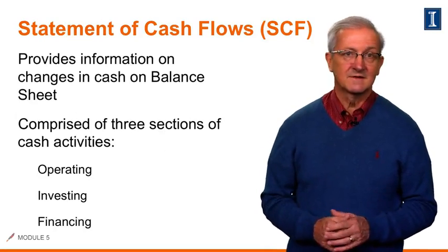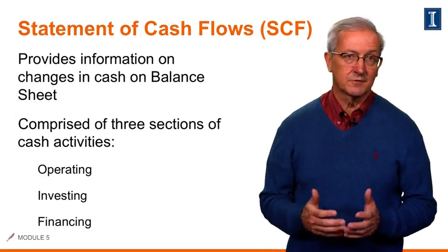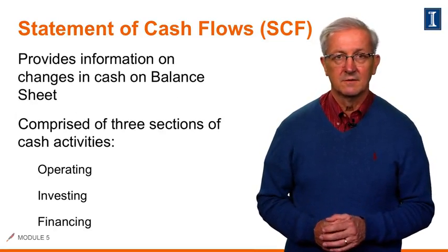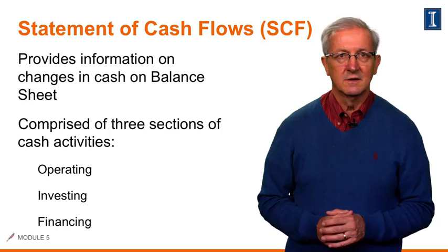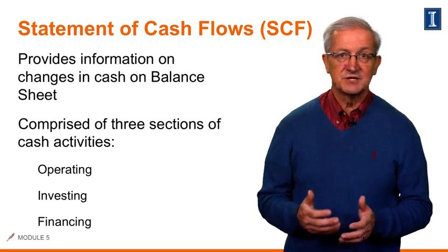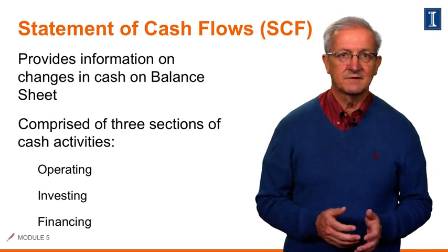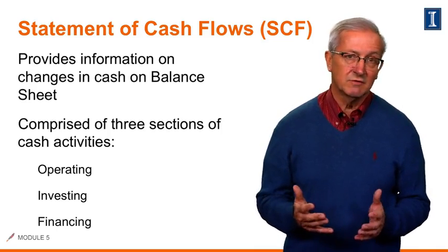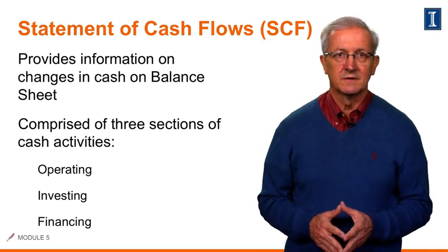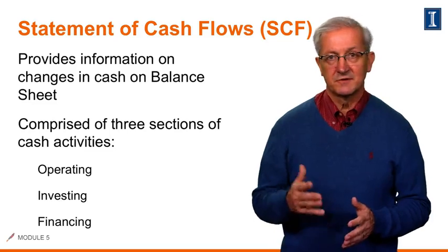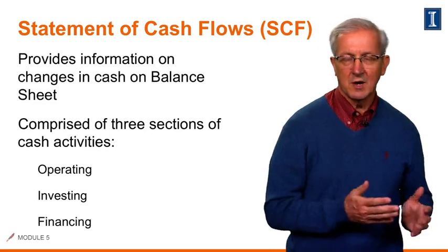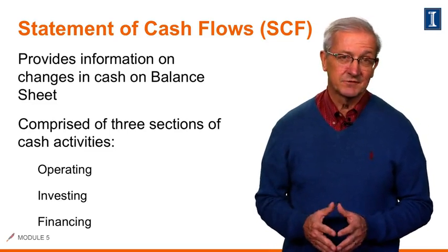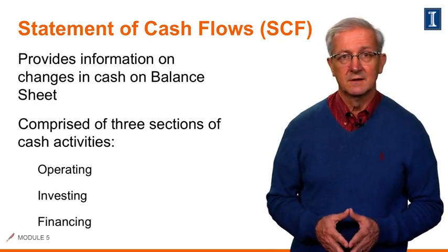As previously discussed, the statement of cash flows, or SCF, is comprised of three sections. First, we have the operating section, which reflects the change in cash resulting from transactions involved in the determination of net income, such as inventory purchases. This section can be reported by the direct, or more commonly, the indirect method. In fact, 98% of all companies use the indirect method.